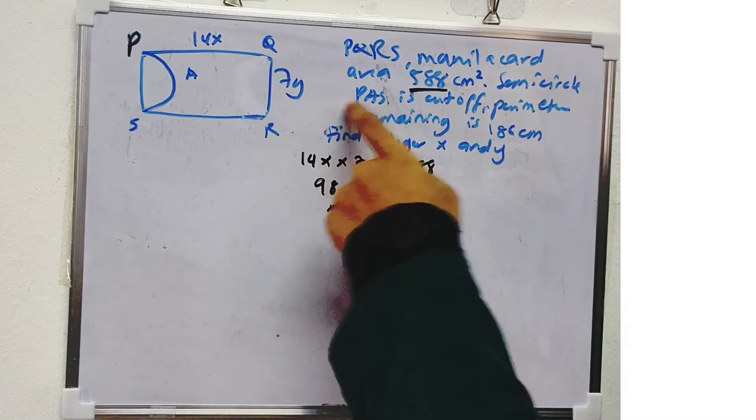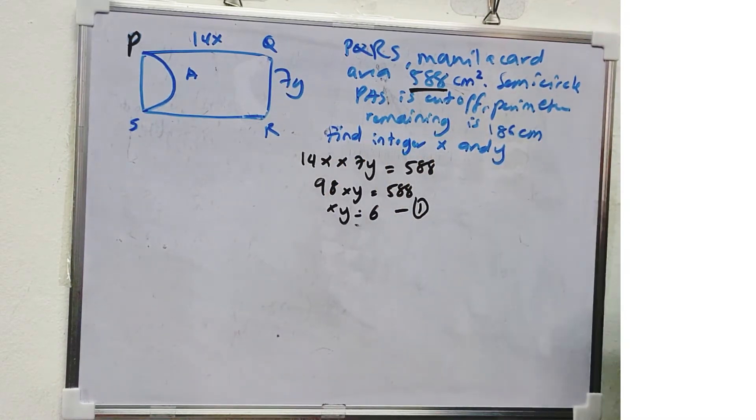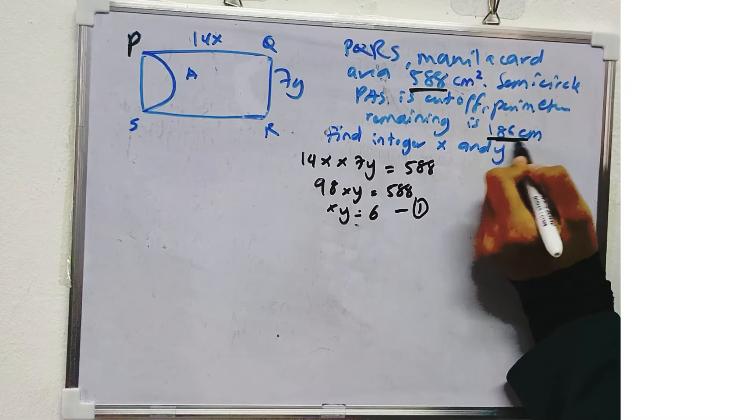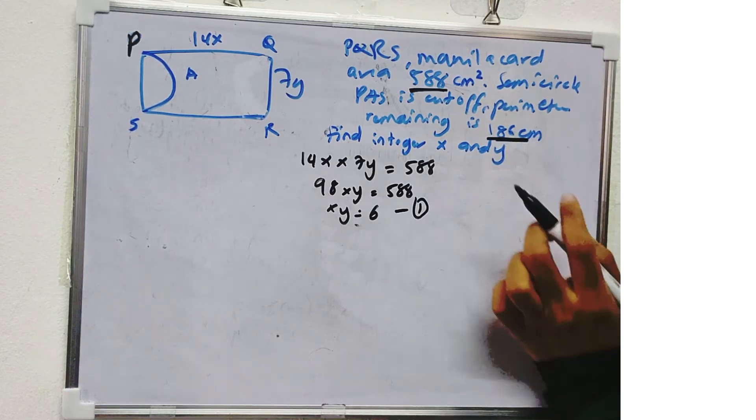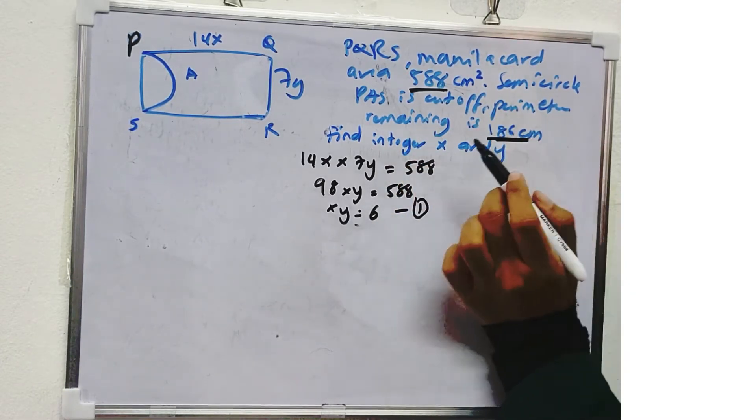After PAS is cut off, the perimeter of remaining is 186 cm. So find the integer of X and Y. So what is the perimeter? After cut off,